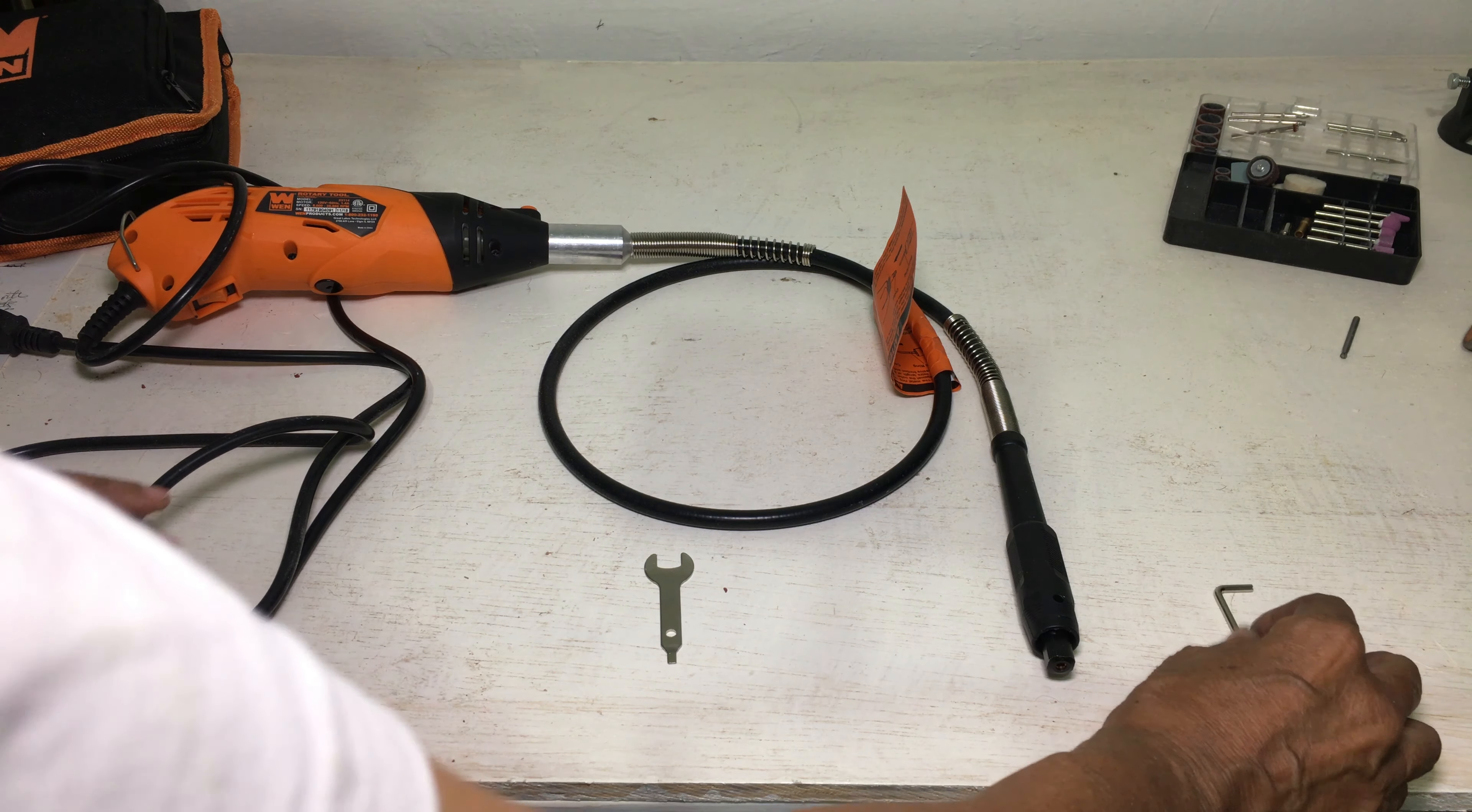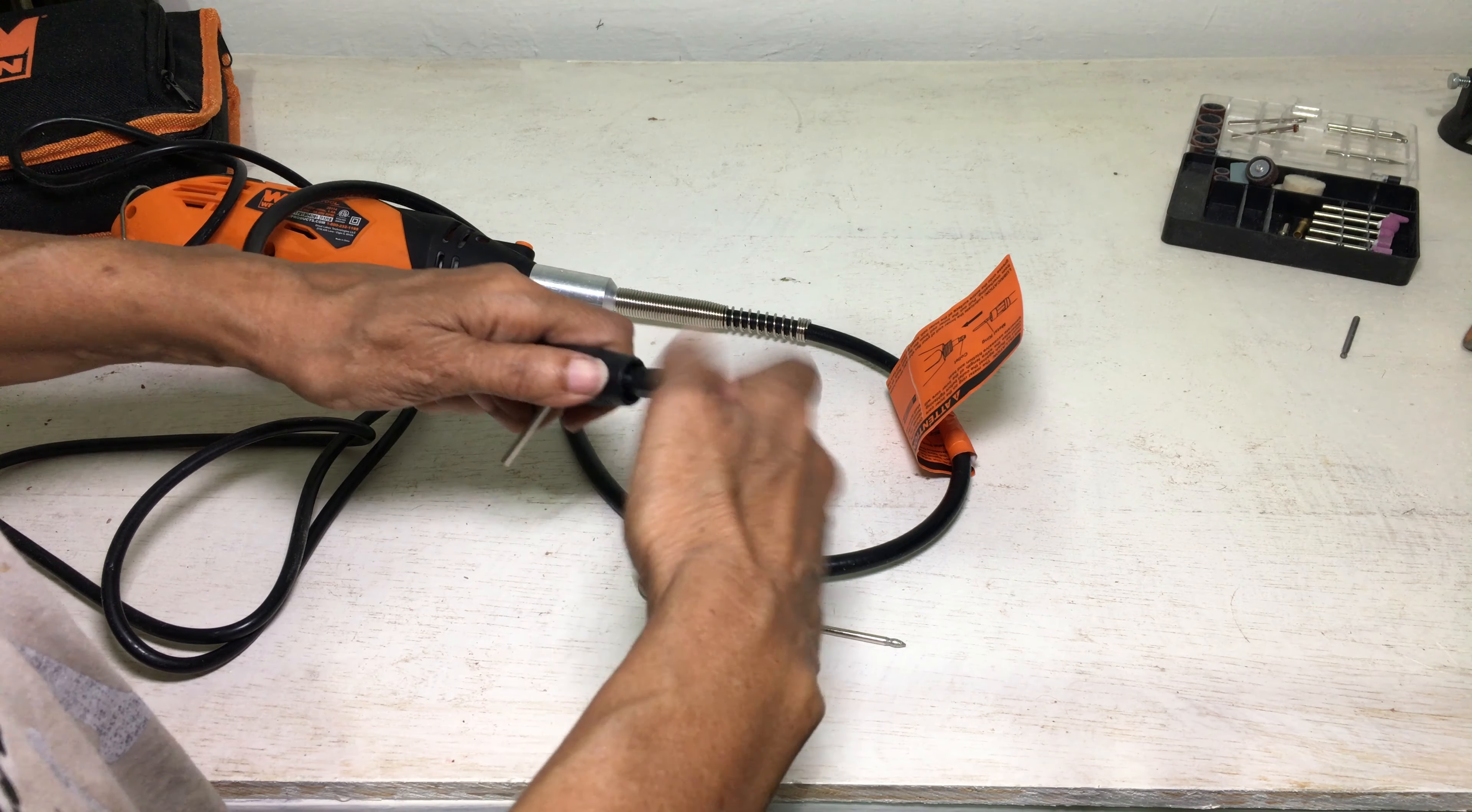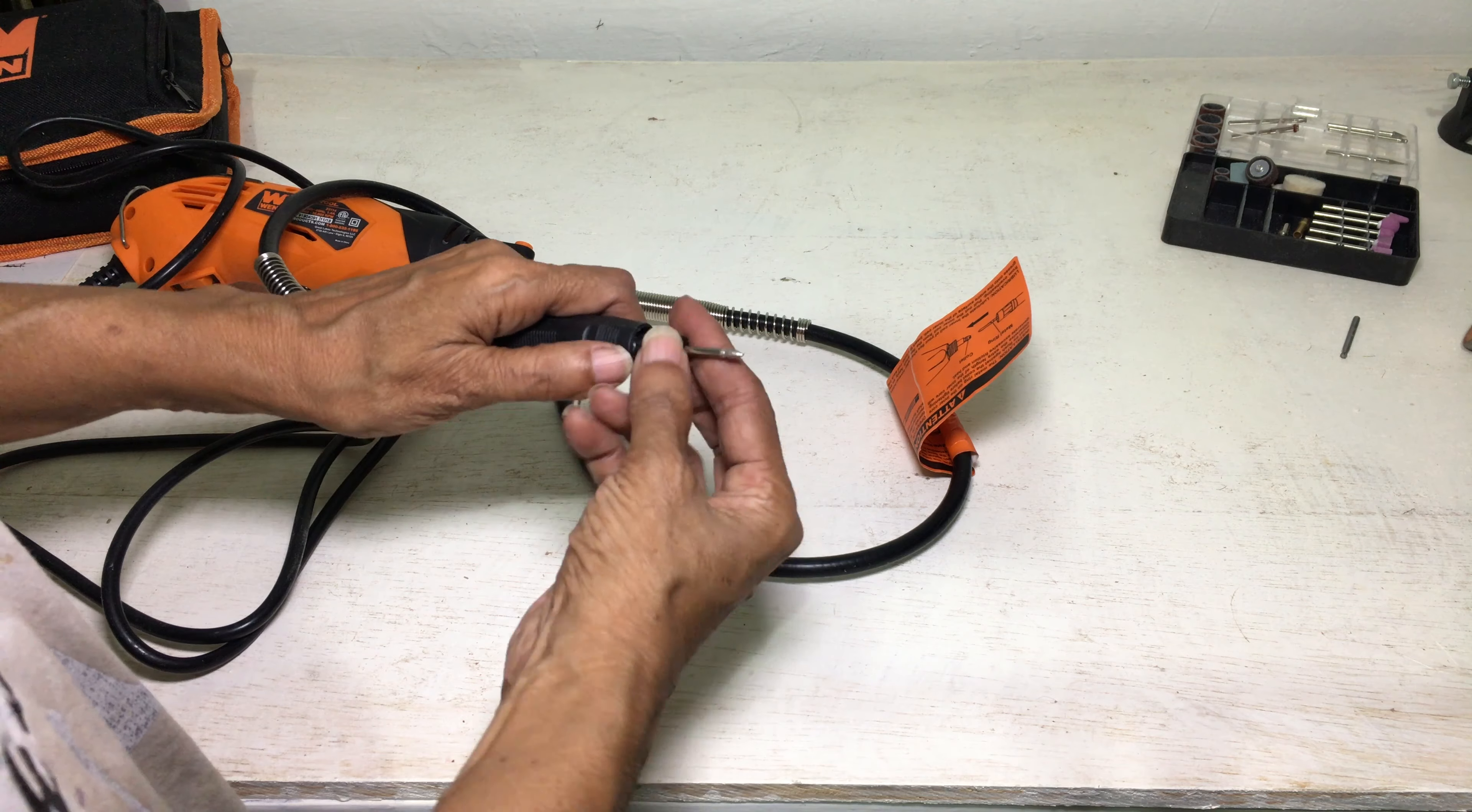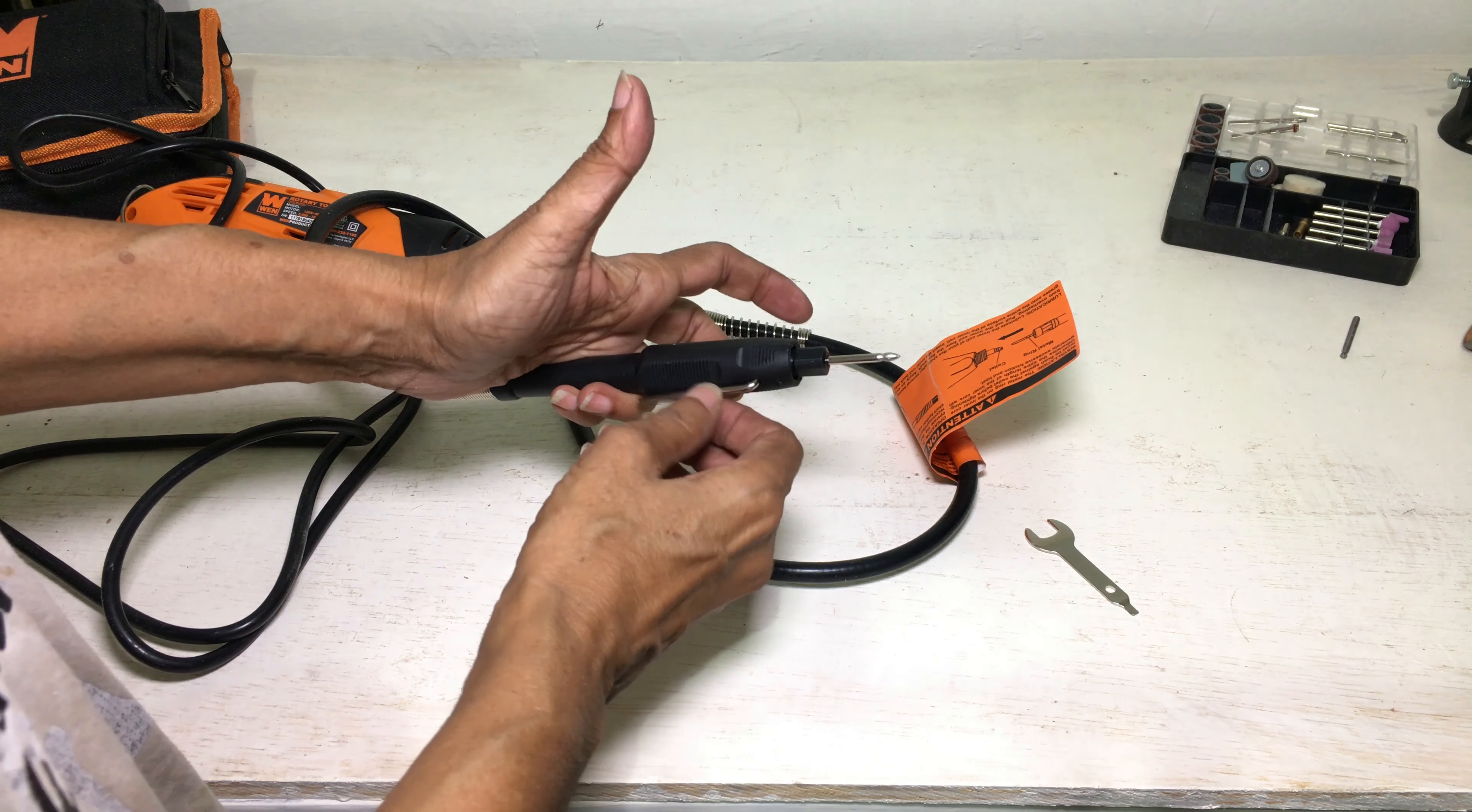To attach a bit to the flex shaft, insert the allen key into the hole on the shaft and slacken the collet nut either by hand or with the wrench. Check to see that the collet is the correct size for the bit. Insert the bit into the collet and tighten using the wrench, all the while holding down the allen key. Remove the allen key once tightened.